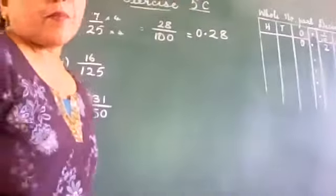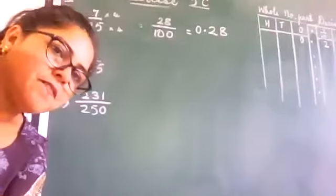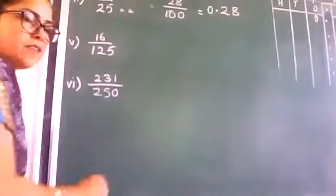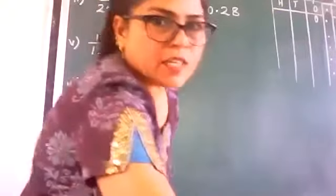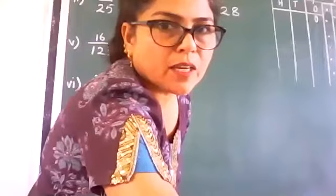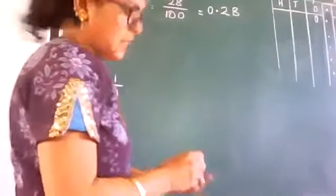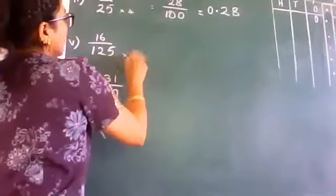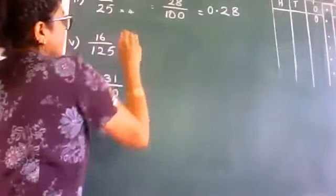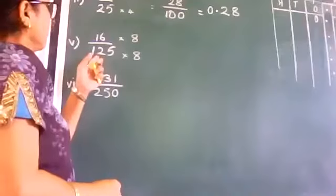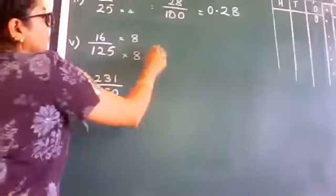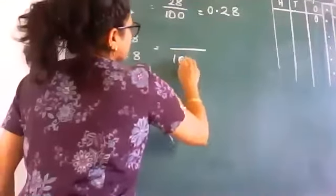The next number is 16 upon 125. So 125, you cannot change it to 100. So obviously you have to change it to 1000. So 125 into 8 is 1000. So these few things you have to remember. Whatever you do with the denominator, you have to do with the numerator.